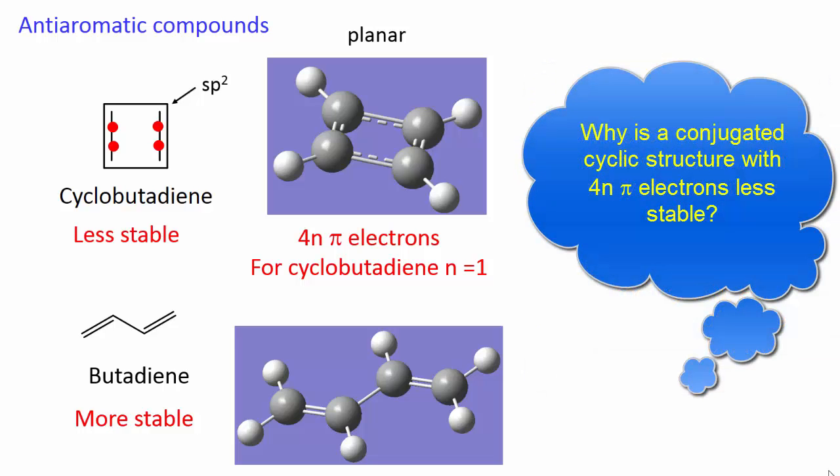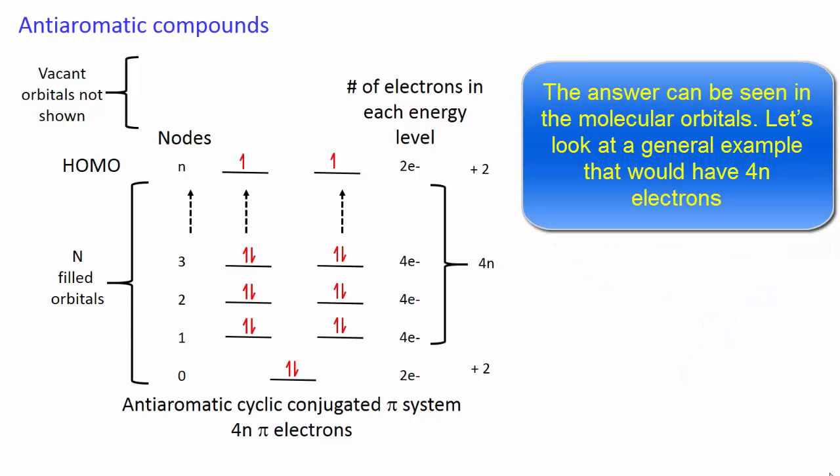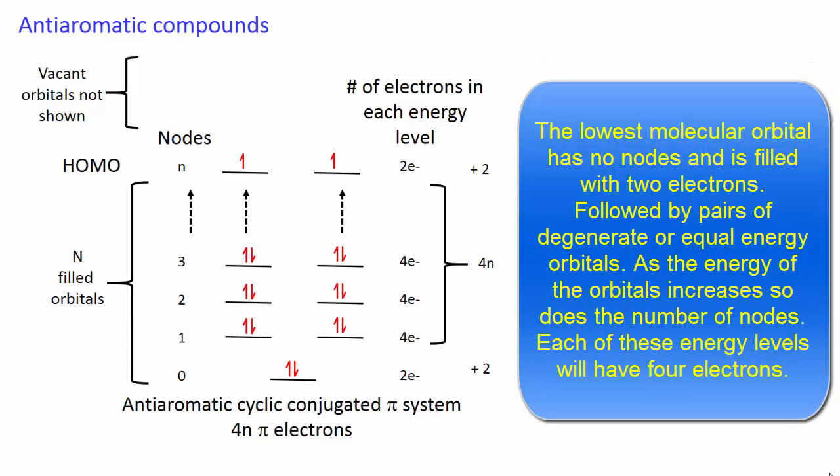Why is a conjugated cyclic structure with 4n pi electrons less stable? The answer can be seen in the molecular orbitals. Let's look at a general example that would have 4n electrons. The lowest molecular orbital has no nodes and is filled with 2 electrons, followed by pairs of degenerate orbitals. As the energy of the orbitals increases, so does the number of nodes.